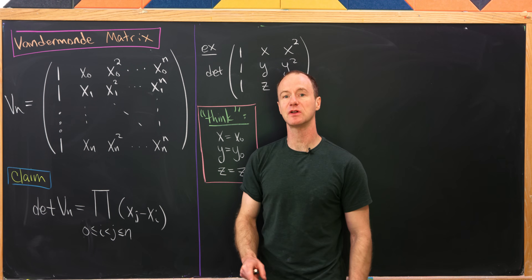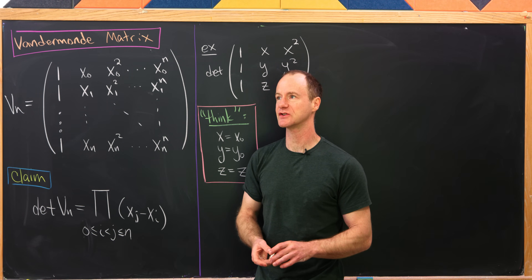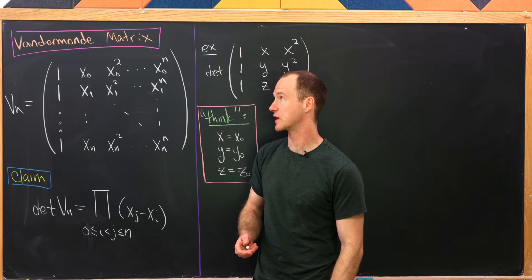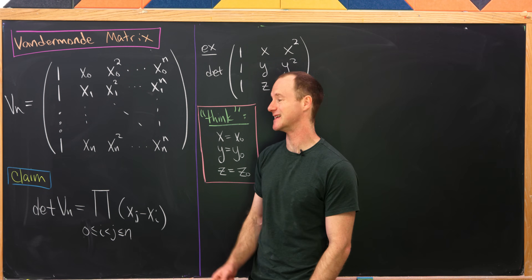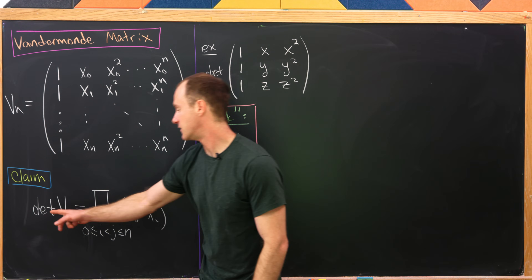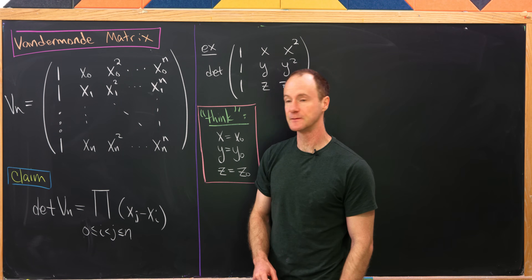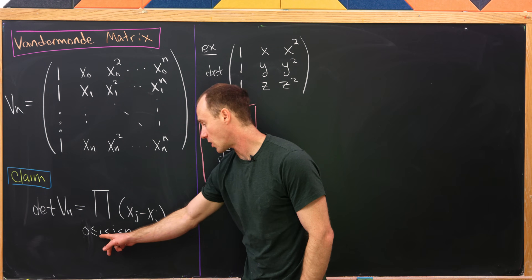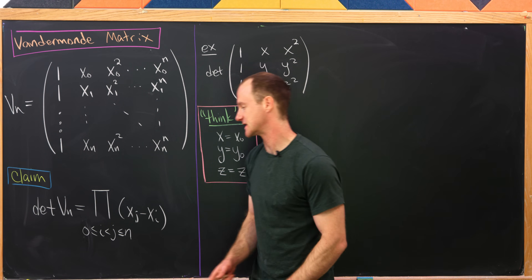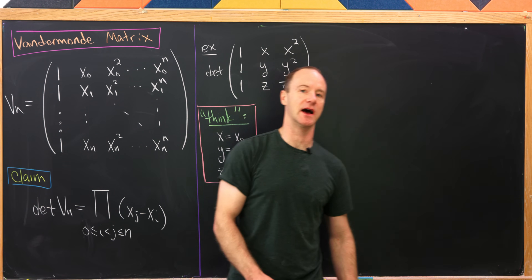Let's notice that this is an n+1 by n+1 matrix. Maybe the most common exercise in linear algebra when working with the Vandermonde matrix is to find its determinant, and it has this nice formula: the determinant of the nth Vandermonde matrix is the product over all i and j between 0 and n where i is less than j, of xj minus xi.